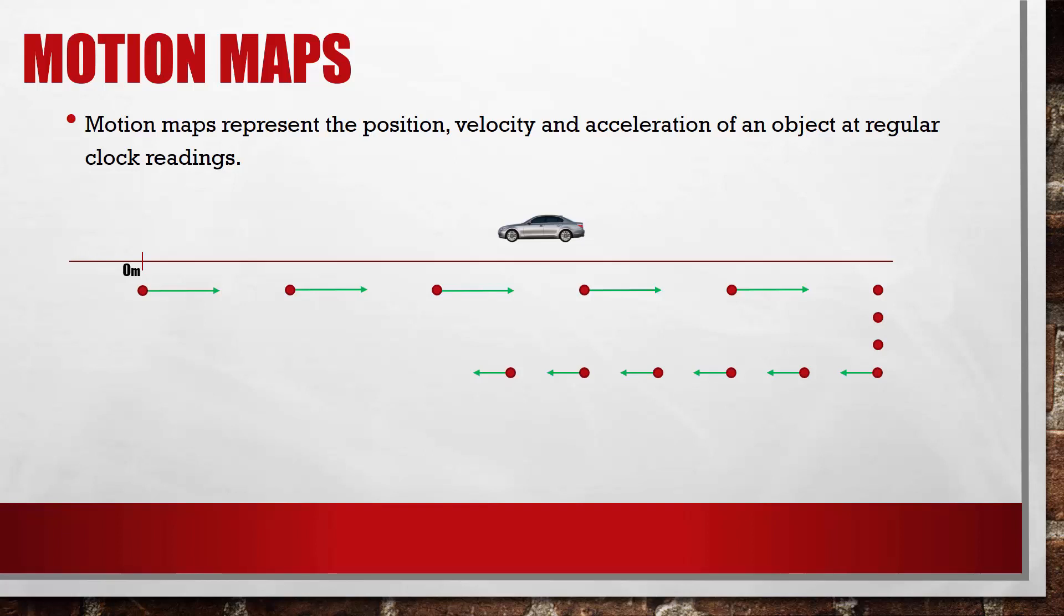Because the position of the car didn't change for several seconds, we draw several dots at that location. So that they don't overlap, we can draw them adjacent to each other.